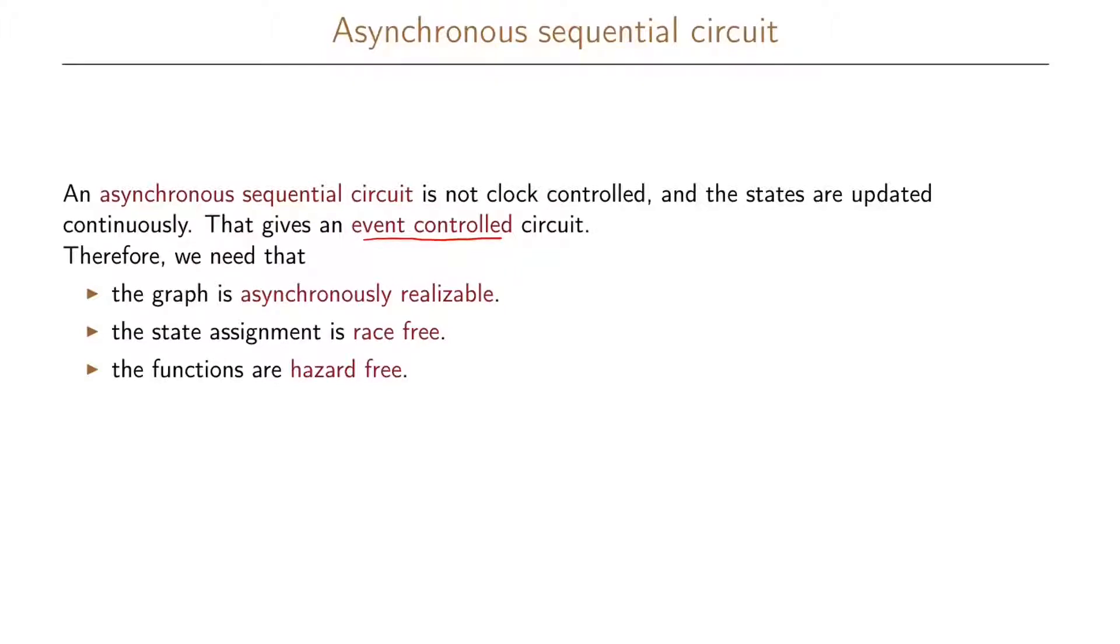In order to realize this, we need to have first that the graph is asynchronously realizable, we need to have the state assignment to be race-free, and we need to make sure that all our functions are hazard-free, that is, they contain all our prime implicants.